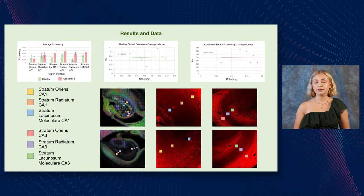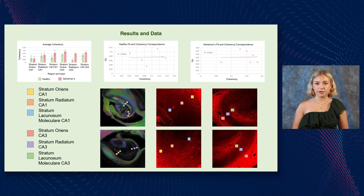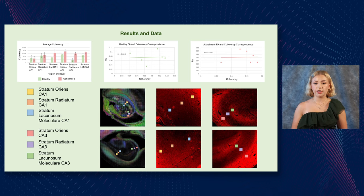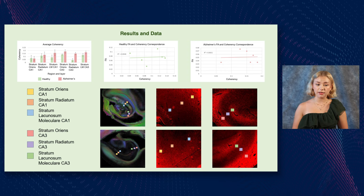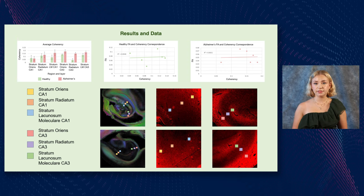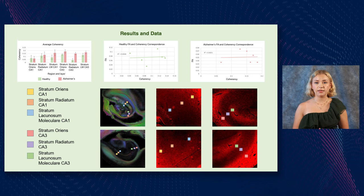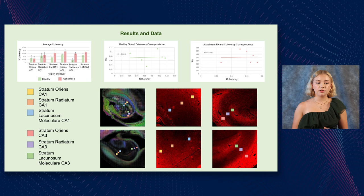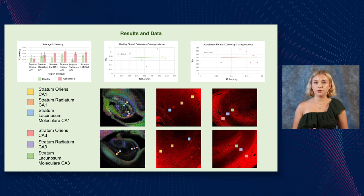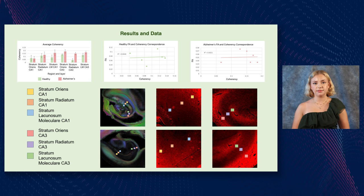We found increased coherency in two of the six regions in the Alzheimer's brain due to the degradation of one of the two types of fibers that usually create a crossing pattern in a healthy brain. However, there was no significant correlation between the coherency values from the MRI scans and those from the microscopy images, suggesting that more specific diffusion MRI markers will be needed to accurately validate the MRI abnormalities. Thank you.